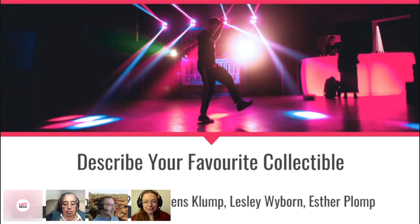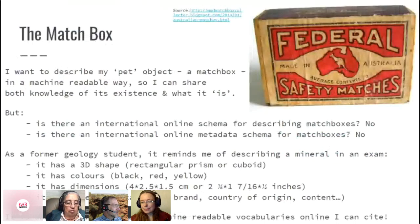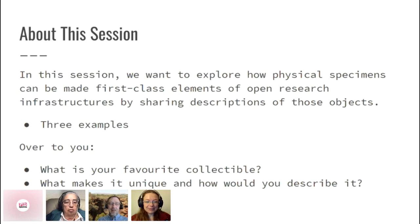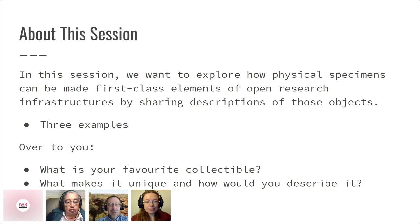About the session: we want to explore how physical specimens can be made first-class elements of open research infrastructures by sharing descriptions of those objects. We are avoiding the M-word — metadata. We will give you three examples of how to describe an object and then hand it over to you to hear about your favourite collectible, what makes it unique, and how you would describe it.